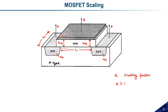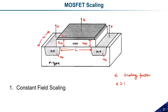We have a simple MOSFET with parameters L, W, oxide thickness, and doping density. If we want to maintain the same properties after scaling, some parameters must be changed — doping density, supply voltage, and lateral and vertical dimensions must all be adjusted. There are two types of scaling techniques: constant field scaling and constant voltage scaling.